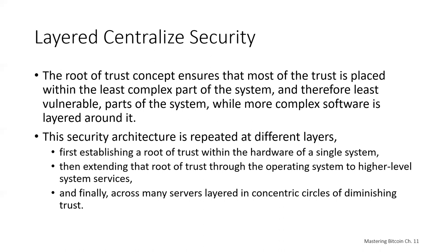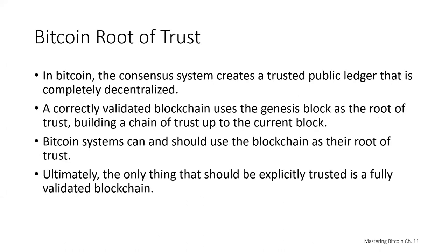Bitcoin security architecture is different. In Bitcoin, the consensus system creates a trusted public ledger that is completely decentralized. A correctly validated blockchain uses the Genesis block — that very first block that Satoshi Nakamoto wrote back in January 2009 — as the root of trust, building a chain of trust up to the current block, some 700,000 blocks later. Bitcoin systems can and should use the blockchain as their root of trust.